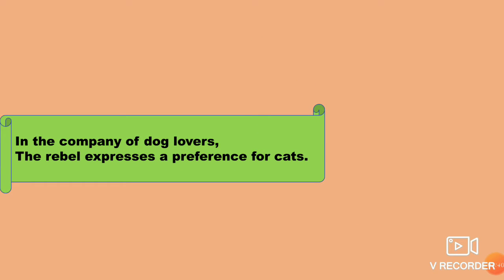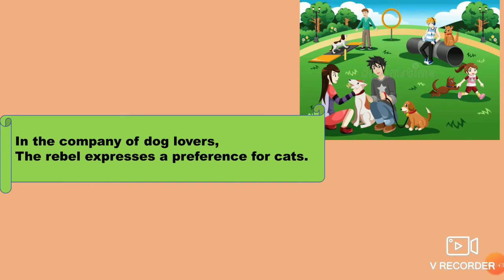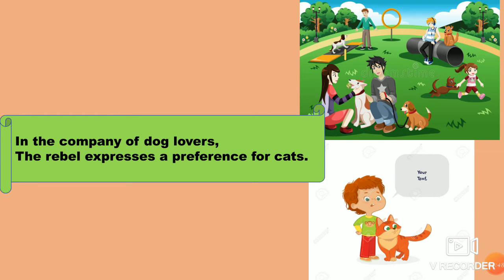In the company of dog lovers, the rebel expresses a preference for cats. So here, when everybody is showing a liking towards dogs, the rebel immediately says that cats are best. As you see in the picture, everybody is taking care of their pets — they are all dog lovers. When the rebel sees that, he says that cats are best.